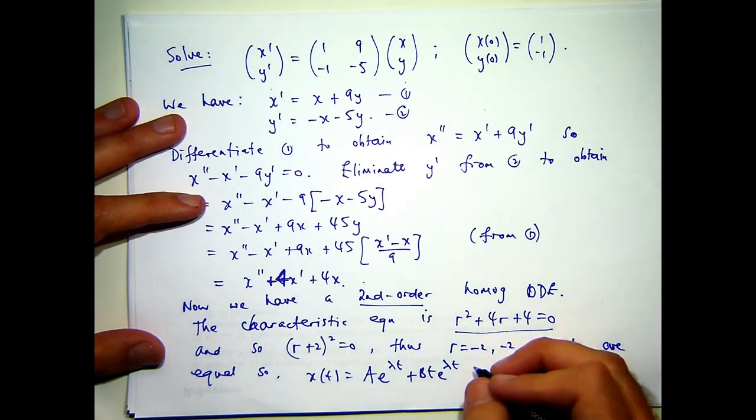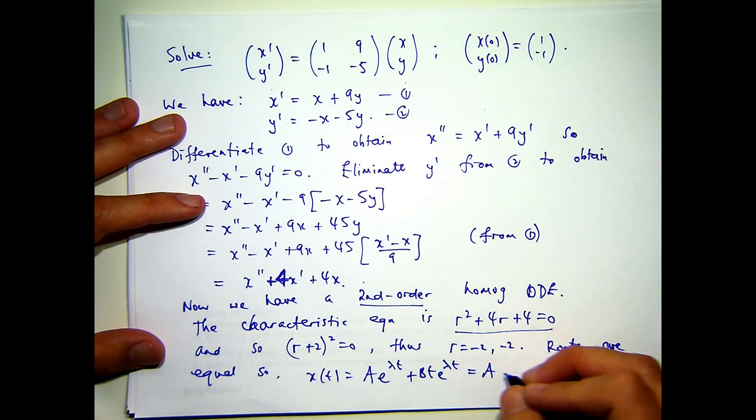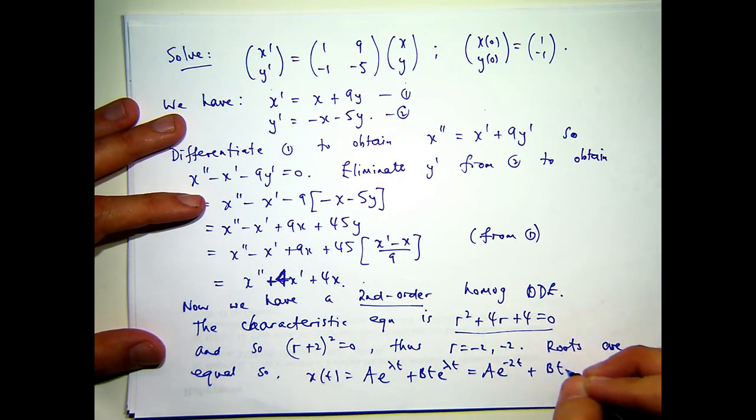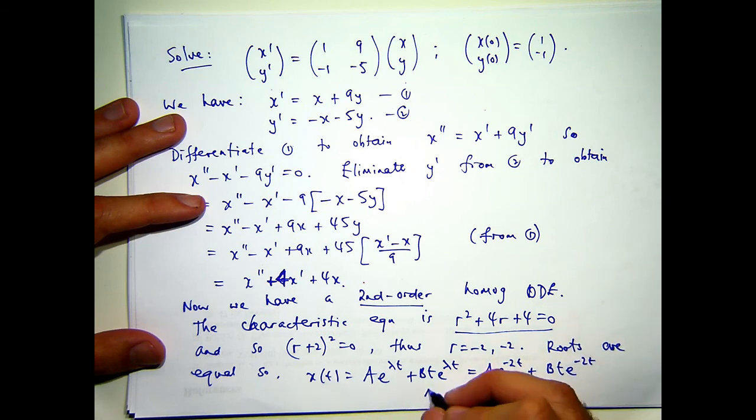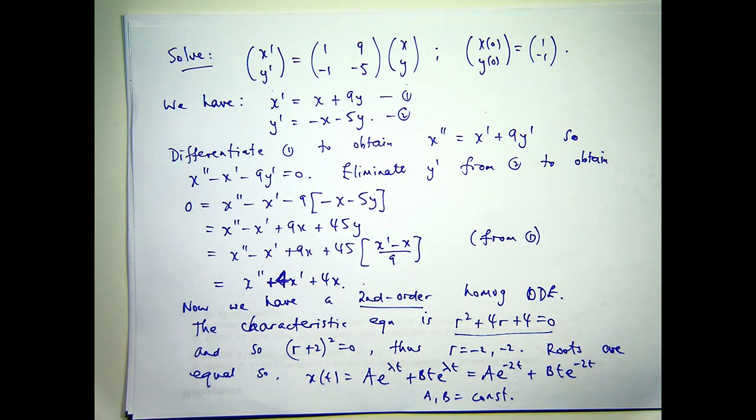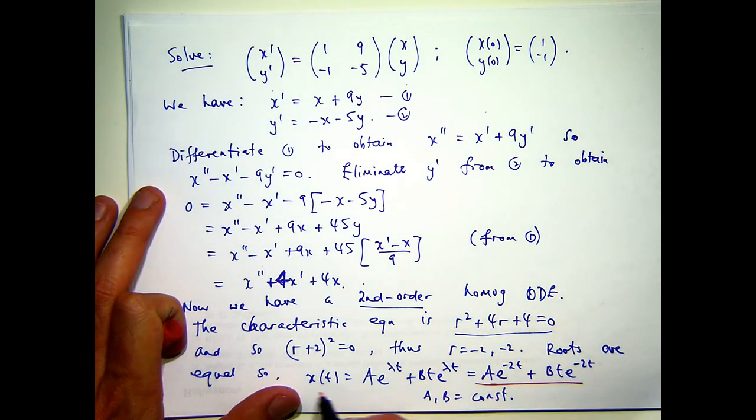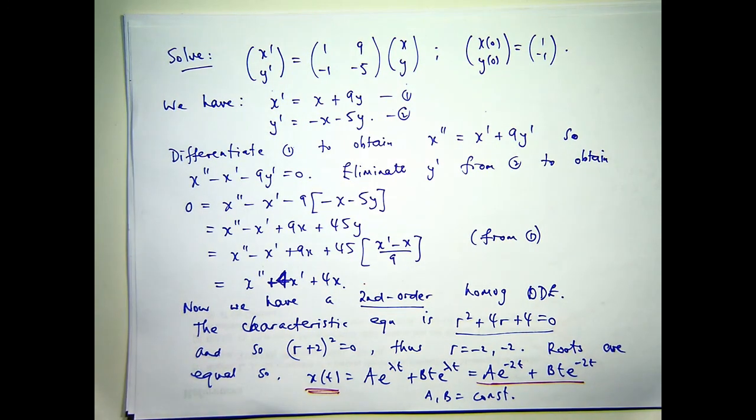So a and b here are constants. So we've kind of come up with half of our general solution to our system. We've got x, x of t.